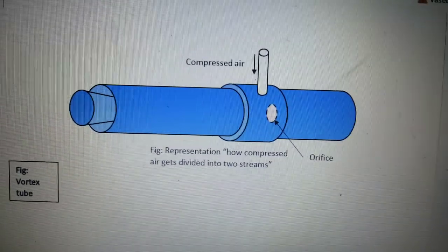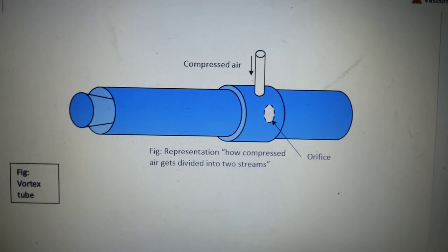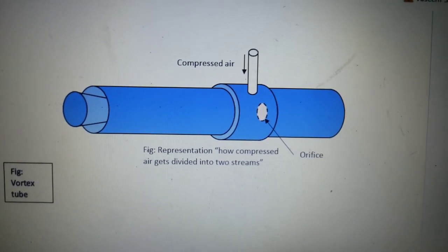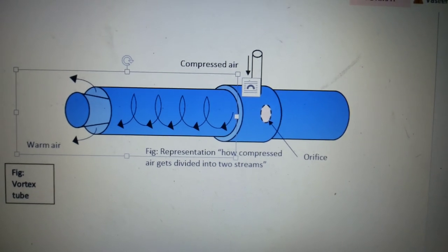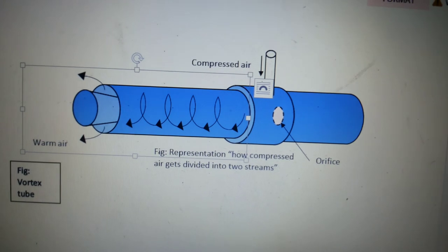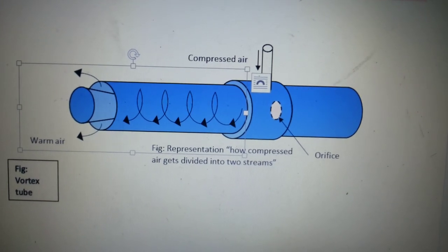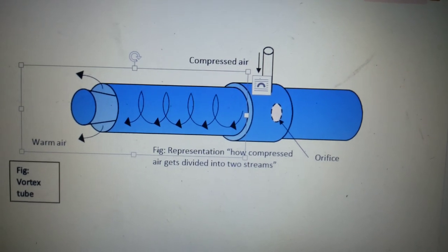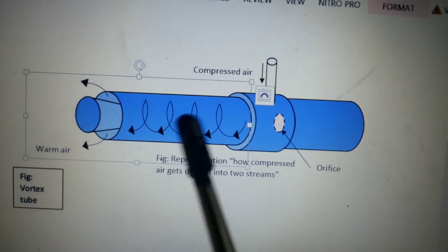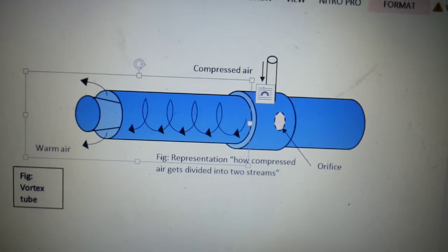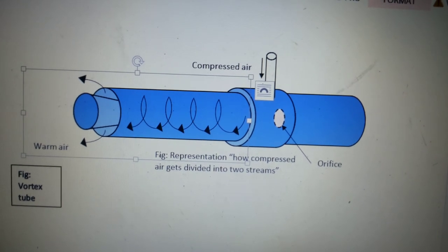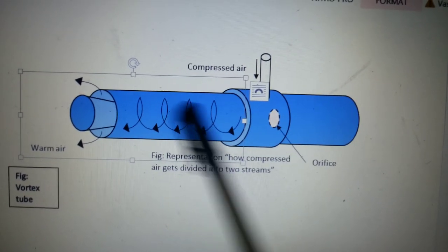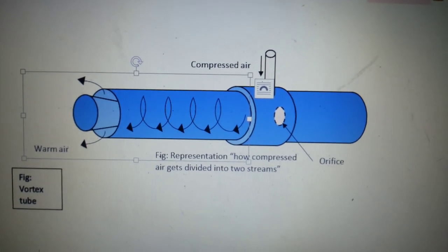Due to the collision at the valve, the inner or secondary vortex is formed. The warm air comes out of the throttle wall, but because of the collision at the valve, the secondary or inner vortex is formed and its reversed axial flow starts through the core, through the center. That air is at low pressure.